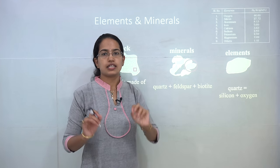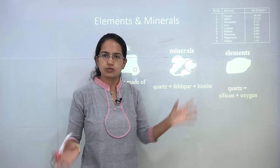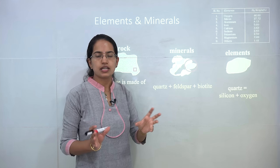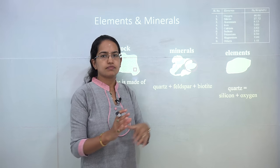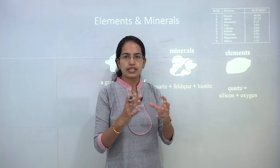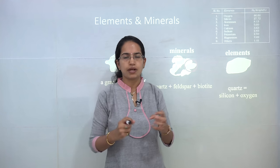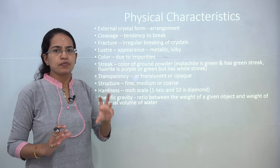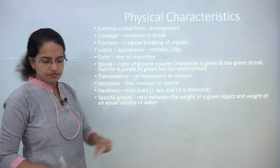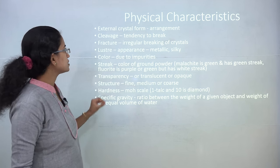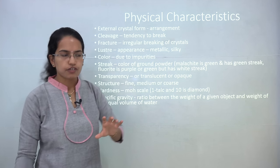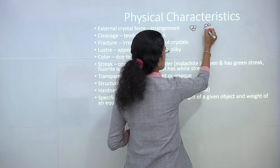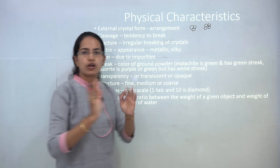Elements rarely occur exclusively — it is very difficult to find silicon or calcium exclusively present in nature. They are present either in the form of minerals or as compounds. Now, there are a few physical characteristics that help us understand the uniqueness of a mineral. As we saw on the rocks, each has an external crystal form — a unique arrangement. The molecules could be arranged in a tetrahedral fashion, an octagonal fashion, or other forms.